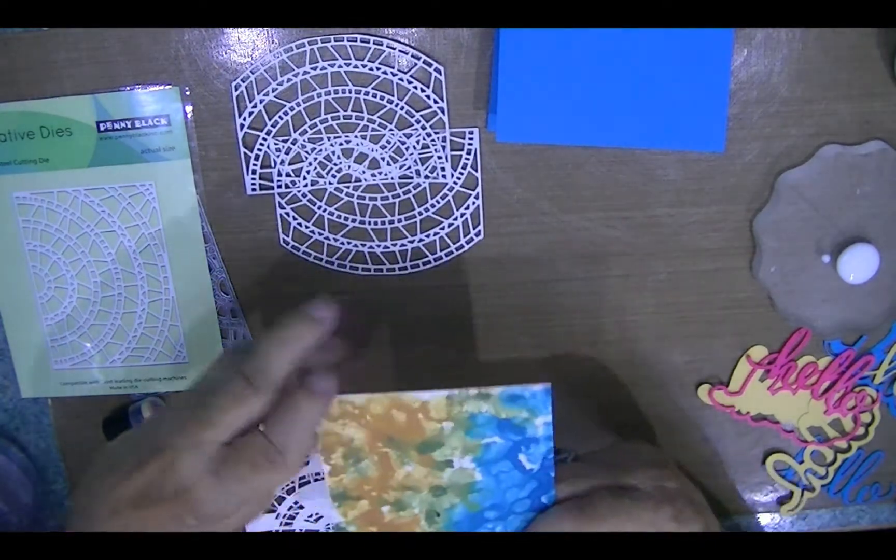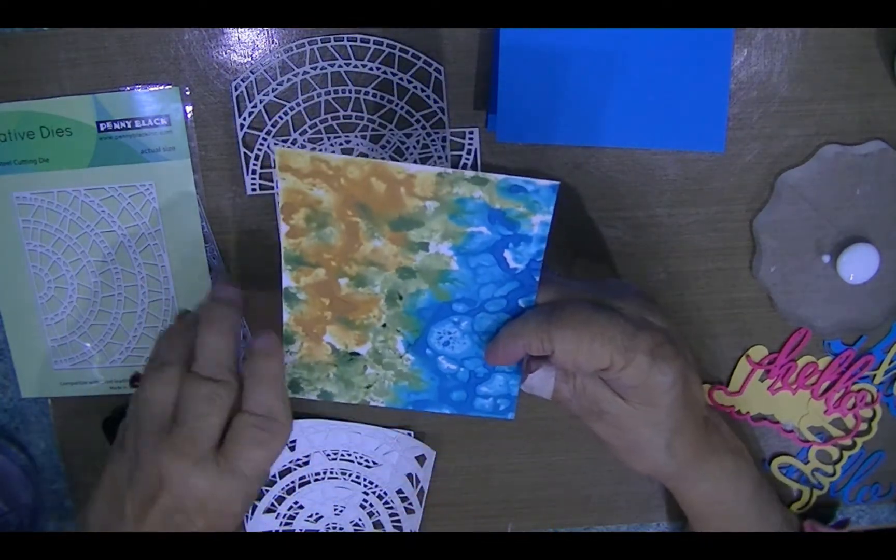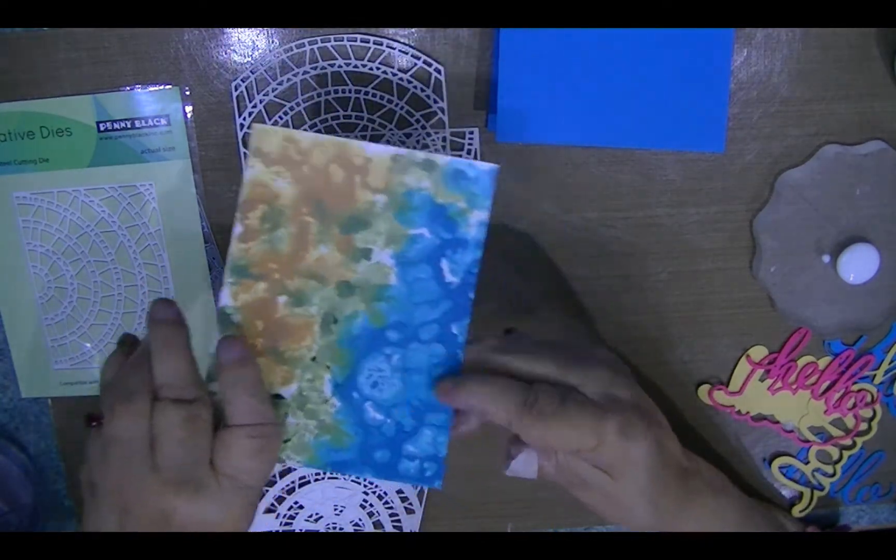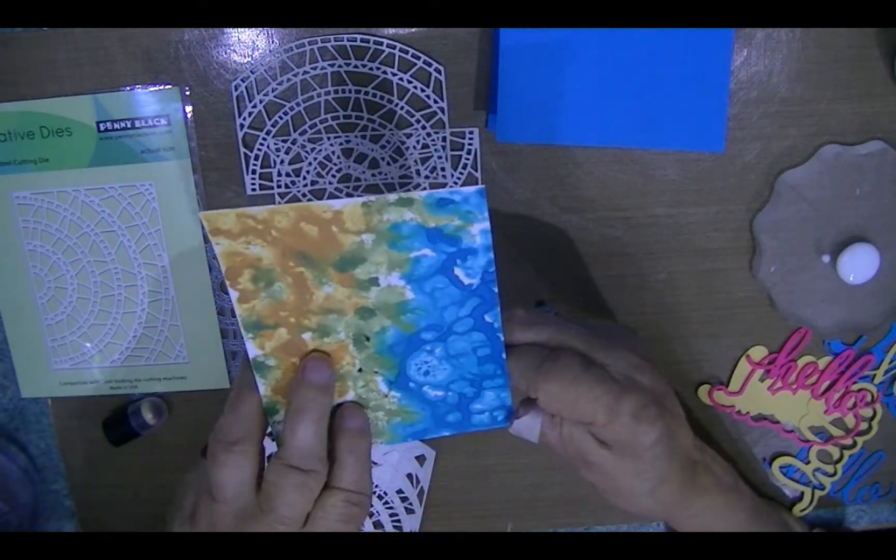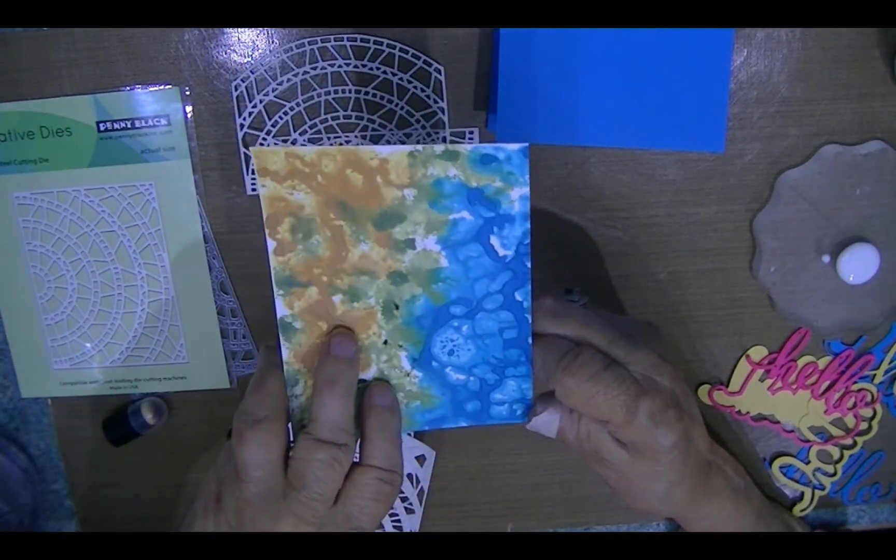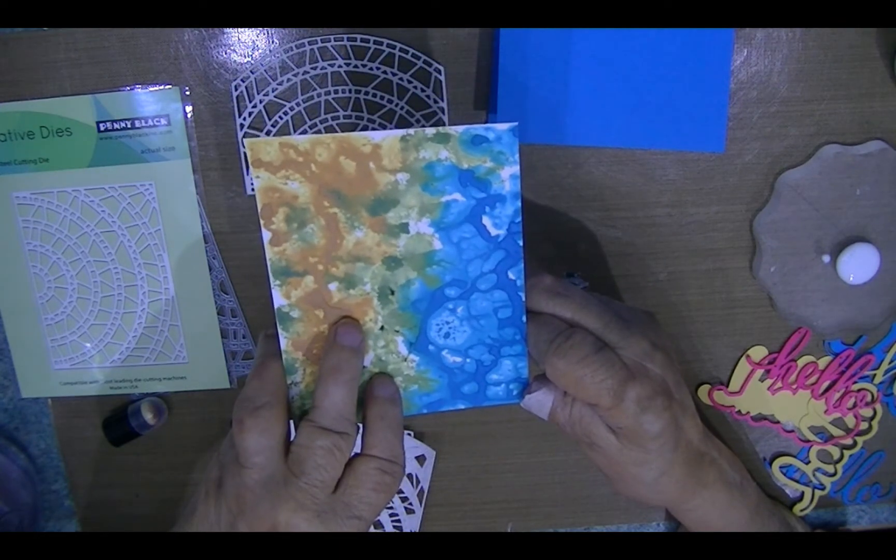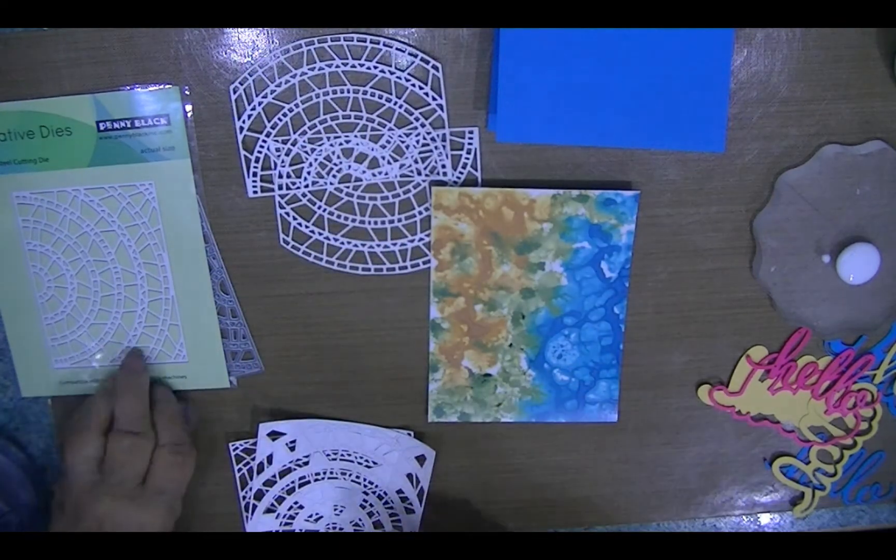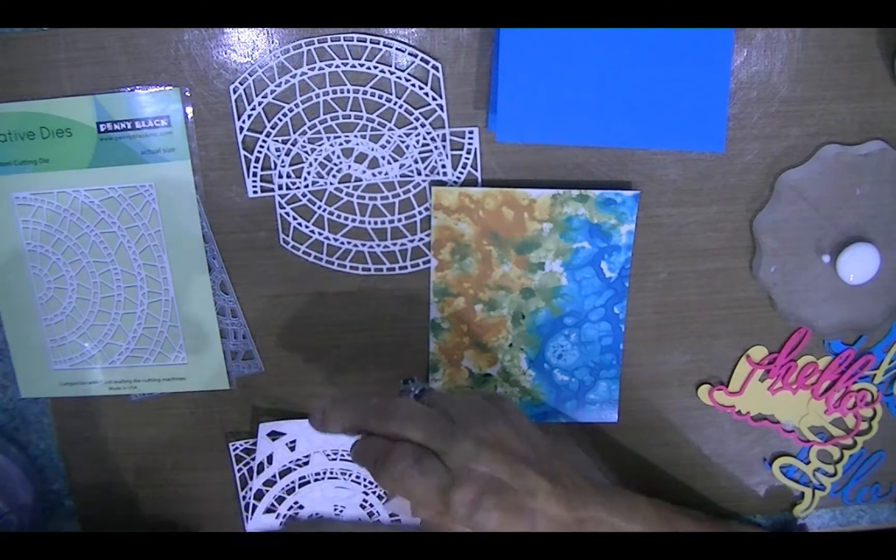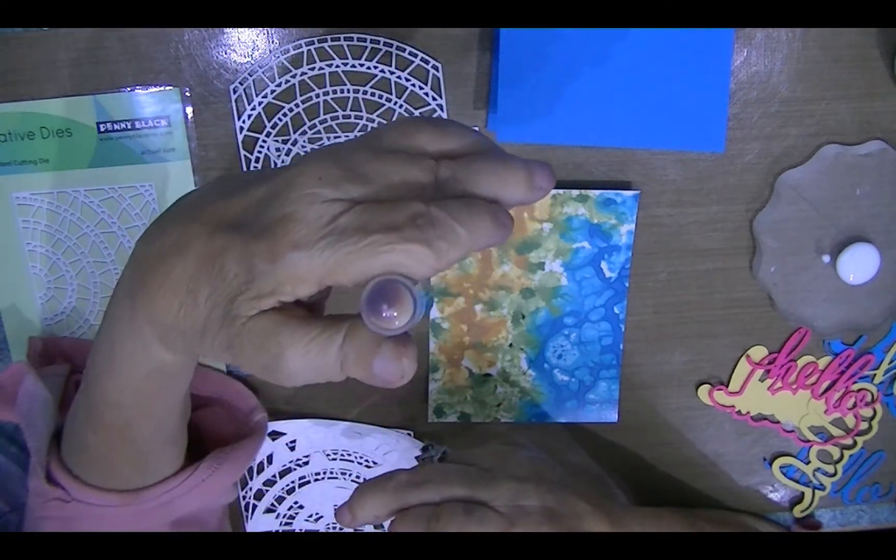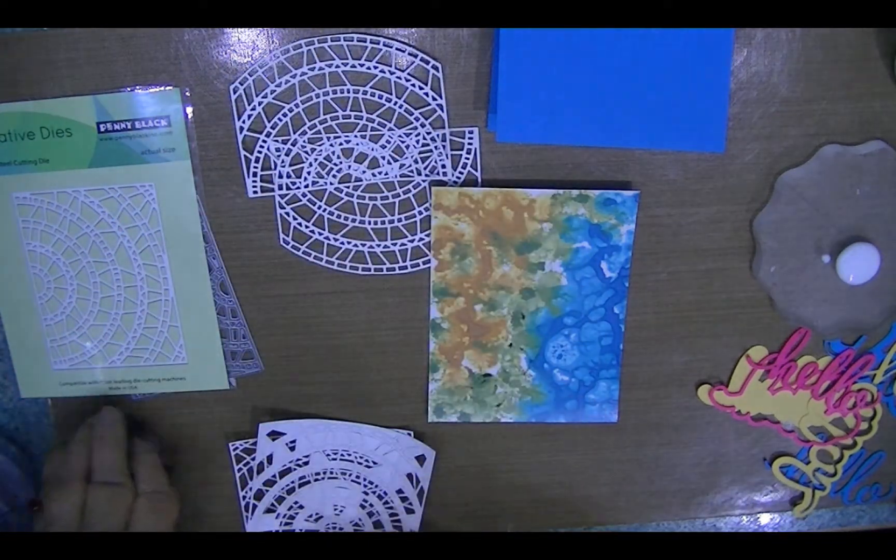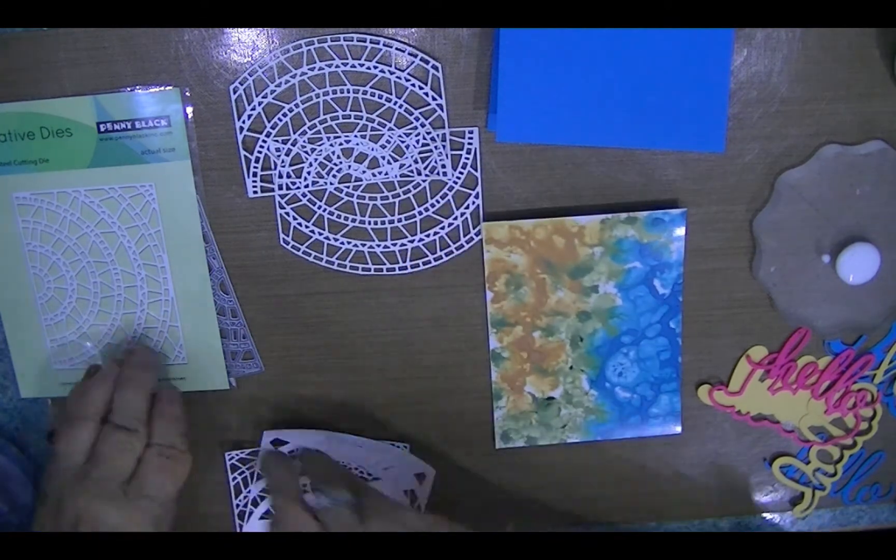I'm starting with this background from my background stash that I made and just put in a drawer. It's on glossy paper and I'm pretty sure this is alcohol ink that I dabbed on with a sponge dauber, and then also dropped a few drops of alcohol ink on it.